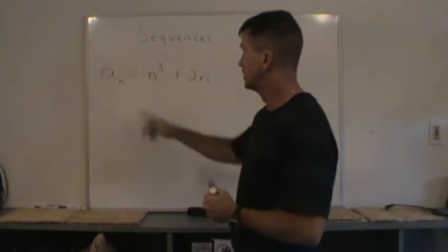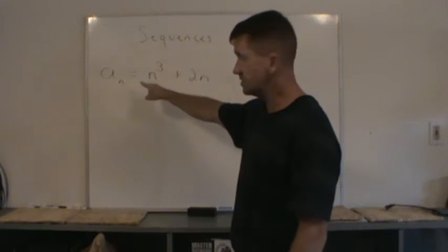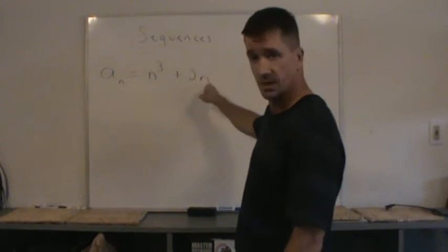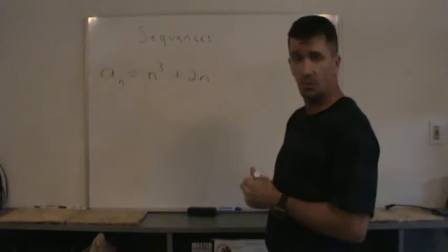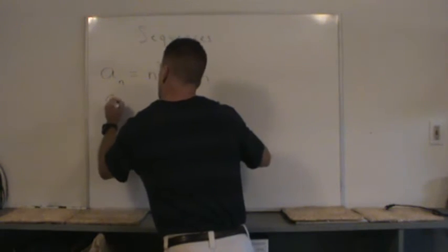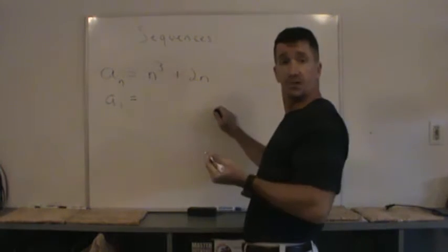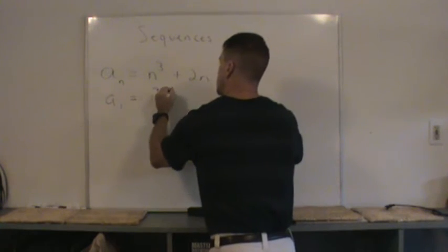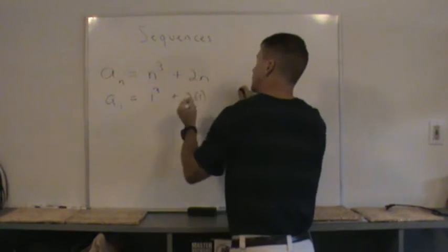So here's an example of a sequence: a_n equals n cubed plus 2 times n. And we'll find the first term of the sequence, that would be a_1. We just substitute 1 for n. We get 1 cubed plus 2 times 1, which is 3. So there's the first term of the sequence.